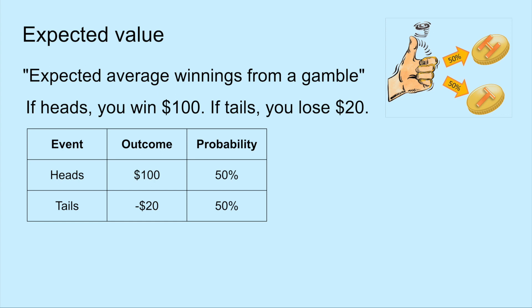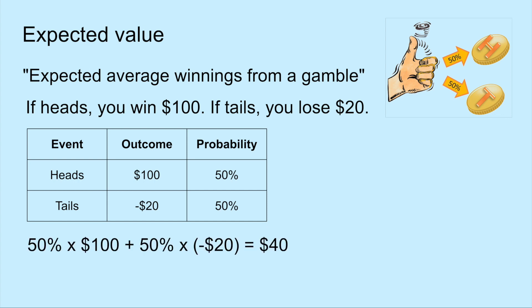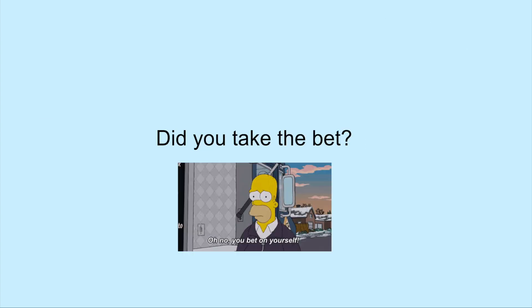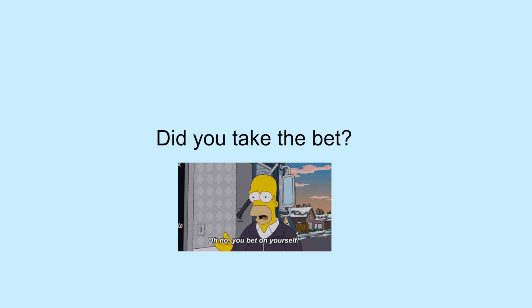One way to describe this using numbers is expected value. The mathematical way to calculate expected value is the average of its outcomes, each weighted by its probability. So the expected value here is 50% times $100, plus 50% times minus $20, which gives us $40. This means that if you keep up this gamble, you should expect to win on average $40 for each game we play. But just because the expected value is positive — in other words, you should expect to win — doesn't mean that everyone would have taken the bet. That's where our own individual risk appetite and some biases come into play.